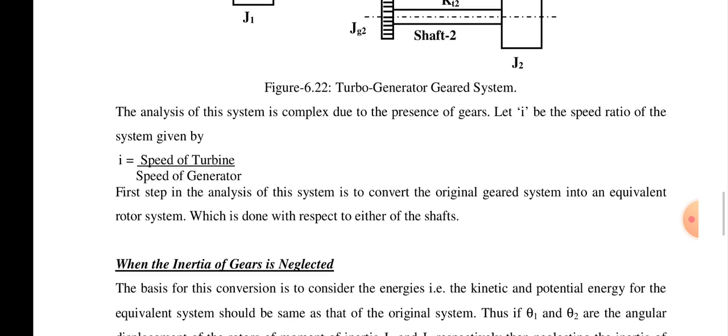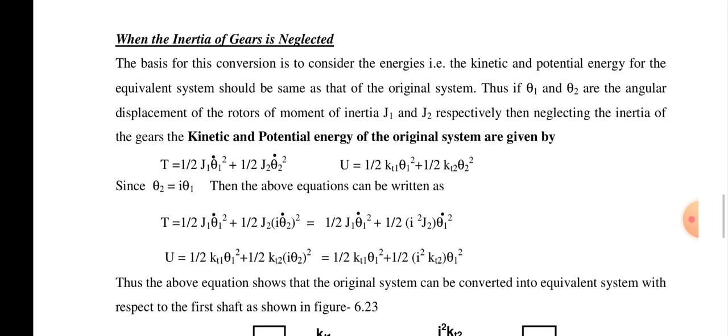The basis of conversion is that the energies — kinetic energy and potential energy — of the equivalent system should be the same as those of the original system. If theta1 and theta2 are the angular displacements of rotors with moment of inertia J1 and J2 respectively, and neglecting gear inertia, the kinetic energy is T = (1/2)J1·θ̇1² + (1/2)J2·θ̇2², and potential energy is U = (1/2)kt1·θ1² + (1/2)kt2·θ2².